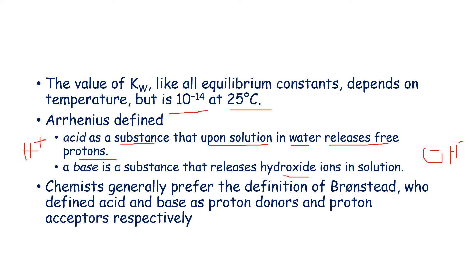Chemists generally prefer the definition of Brønsted who defines acid and base as proton donors and proton acceptors respectively.